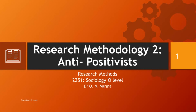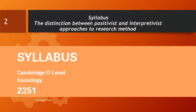Hello again. You'll recall that we started with research methodology 1 where we looked at the positivist. This one is research methodology 2 where we look at the anti-positivist. This lesson is based on the syllabus Cambridge O-level sociology 2251. The research method part 1 reads as the distinction between positivist and interpretivist approaches to research methods.